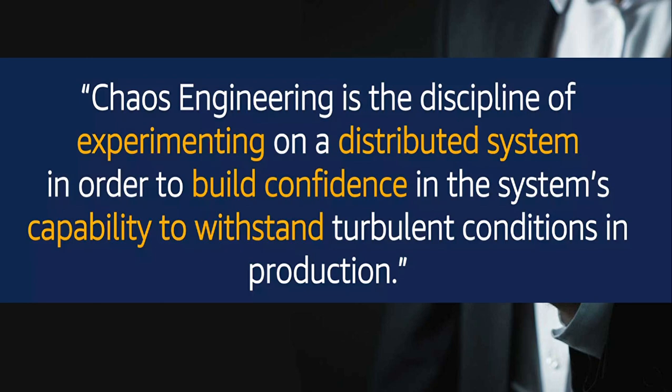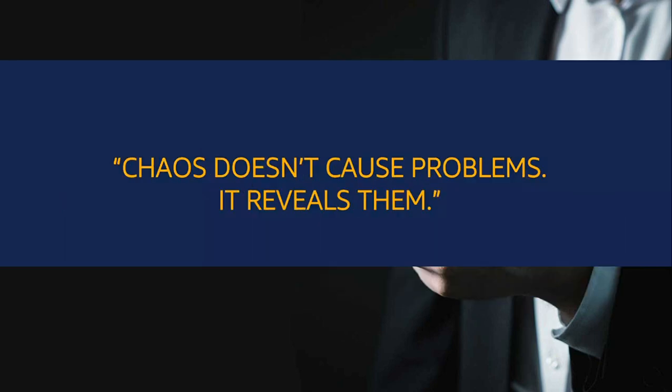As per the definition, chaos engineering is the discipline of experimenting on a distributed system in order to build confidence in the system's capability to withstand turbulent conditions in production. We introduce events or inject faults and failures into the system. The reason for doing that is to make sure we come to know what issues the system will have if anything fails. Chaos doesn't cause problems — it is not negative testing. It helps you reveal the problems your application will have if something fails.